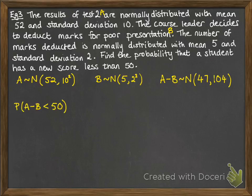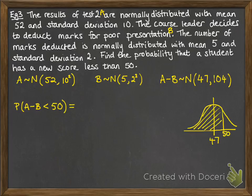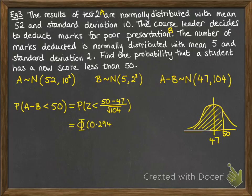So carrying on. We now want the probability that A minus B is less than 50, so the new score is less than 50. We've got that mean of 47 there, we're looking for under 50. So that will be the probability that Z is less than 0.294. Reading off the table, we get our final result of 0.6156.